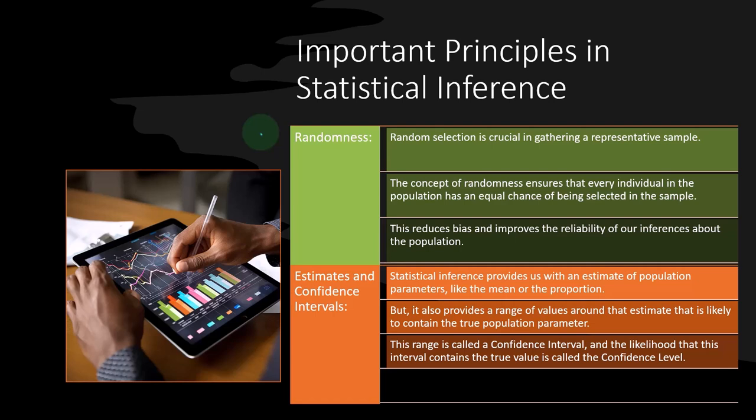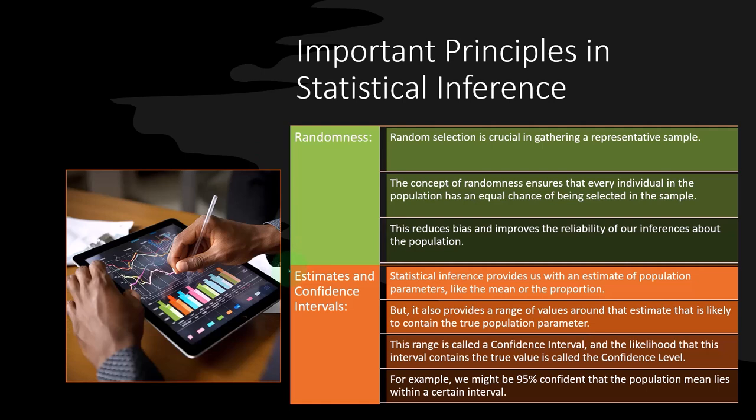So, for example, we might be 95 percent confident that the population mean lies within a certain interval. So you've probably heard when you see statistical testing we're 95 percent confident or there's a five percent margin of error, these kind of terms. Those are going to be more technical statistical terms we'll talk more about in future presentations. Right now, we want to get down the idea of taking...